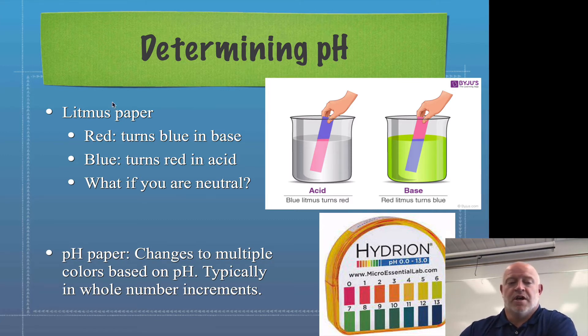There's two types of litmus paper: red litmus paper and blue litmus paper. Red litmus paper stays red if it is an acid and it turns blue in a base. Blue litmus paper stays blue in a base but turns red in an acid. You can see the graphic over here that shows that.